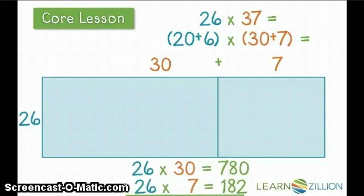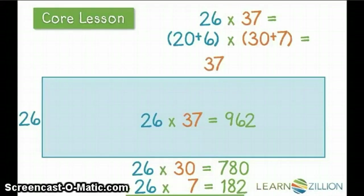26 groups with 30 in each group equals 780, and 26 groups with 7 in each group equals 182. Add it together, 26 groups with 37 in each group, which totals our final product.